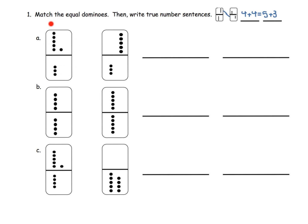What they're doing is saying, we want the entire domino on the left to be matched with an entire domino on the right. For example, this is a six and this is a three, for a total of nine. Here is a zero and a nine, for a total of nine. So we match these two dominoes. Because this is six plus three, and this is zero plus nine, we write six plus three equals zero plus nine.